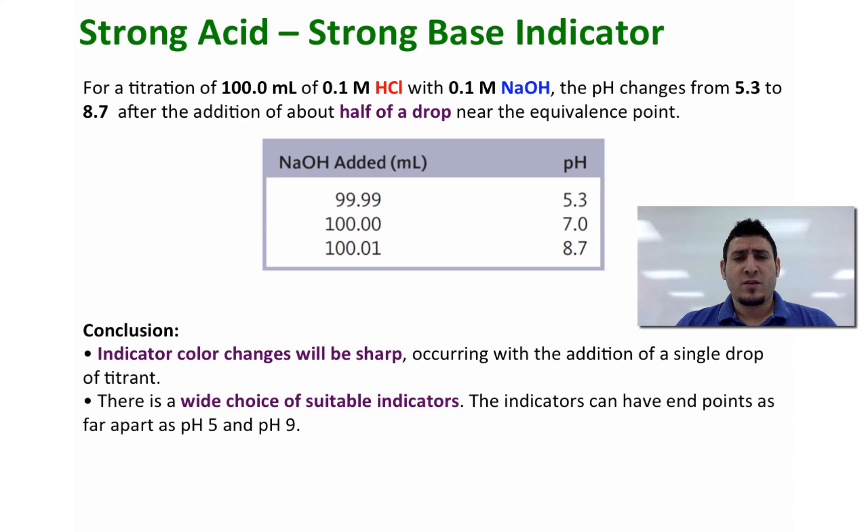So when you are choosing an indicator, the color of the indicator has to change within this range of pH. Now there is a wide choice of suitable indicators when it comes to strong acid and strong base titration.